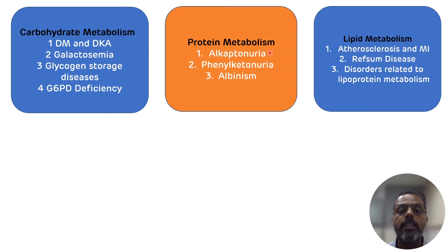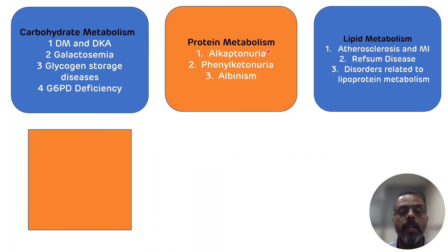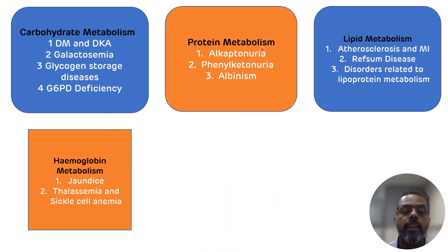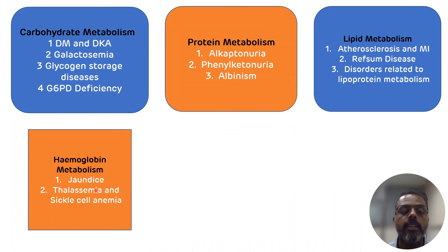Now we will see topics of hemoglobin metabolism. From the hemoglobin metabolism, frequently asked case studies are various types of jaundice and hemoglobinopathies like thalassemia and sickle cell anemia.